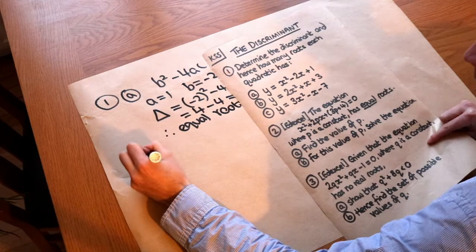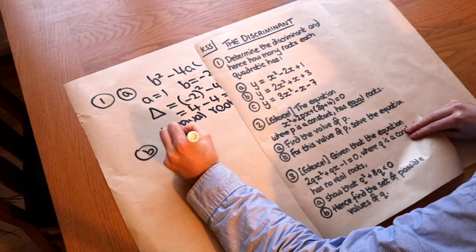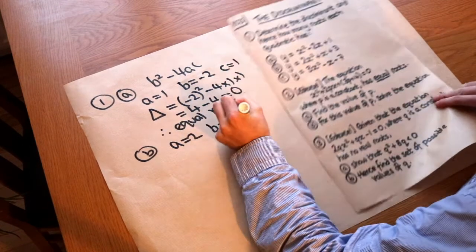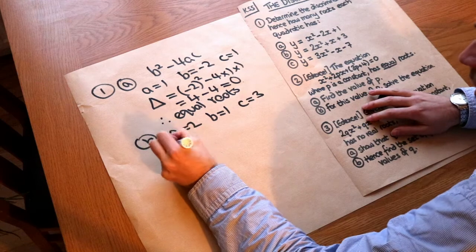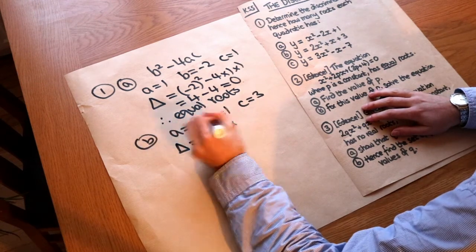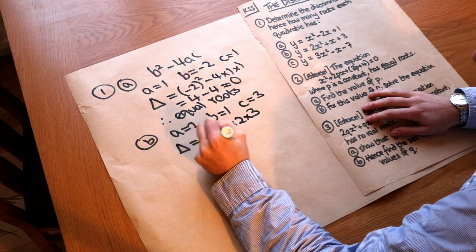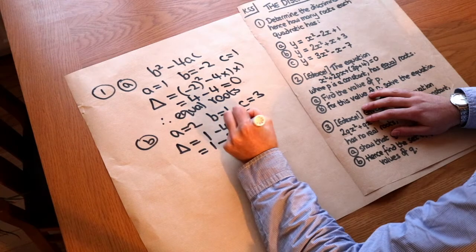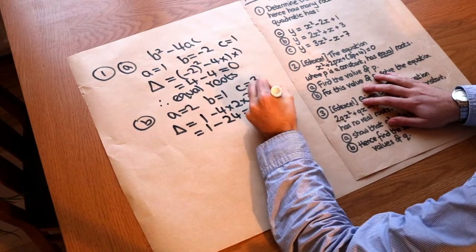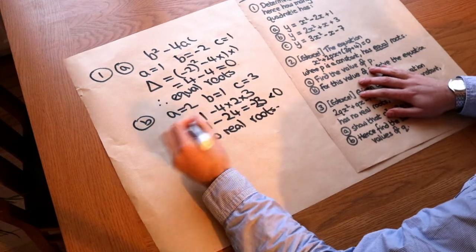What about part b? Here we've got a = 2, b = 1, because it's 1x, and c = 3. And if we calculate the discriminant, the discriminant is b², which is 1², minus 4 × 2 × 3, which is equal to 1 - 24, is -23. Now this is less than 0, and therefore we have no real roots, as we saw from earlier.